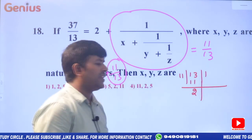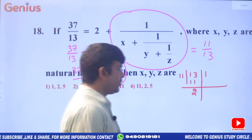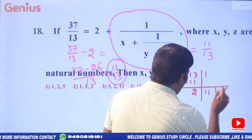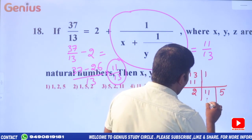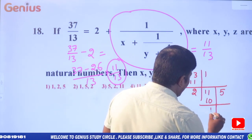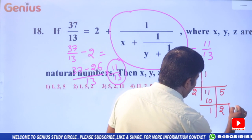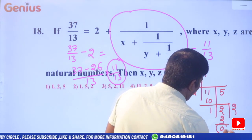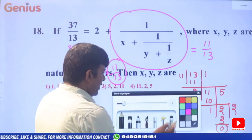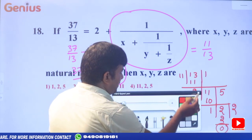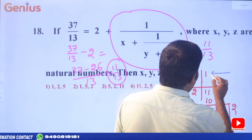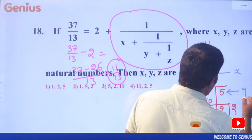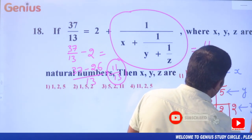Now apply HCF on 11/13: 13 divided by 11 — remainder is 2. Write 11, how many times? 5 times: 5 elevens are 55, but 11 fives are... 2 fives are 10, remainder 1. Then 2 ones are 2, remainder 0. So x=1, y=5, z=2.